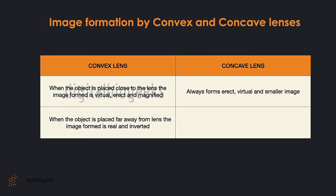When the object is placed very close to the convex lens, the image formed is virtual, erect, and magnified. When the object is placed far away, we get a real and inverted image. This magnified virtual image helps us to read small letters using a convex lens. The concave lens always forms an erect, virtual, and smaller image than the object.